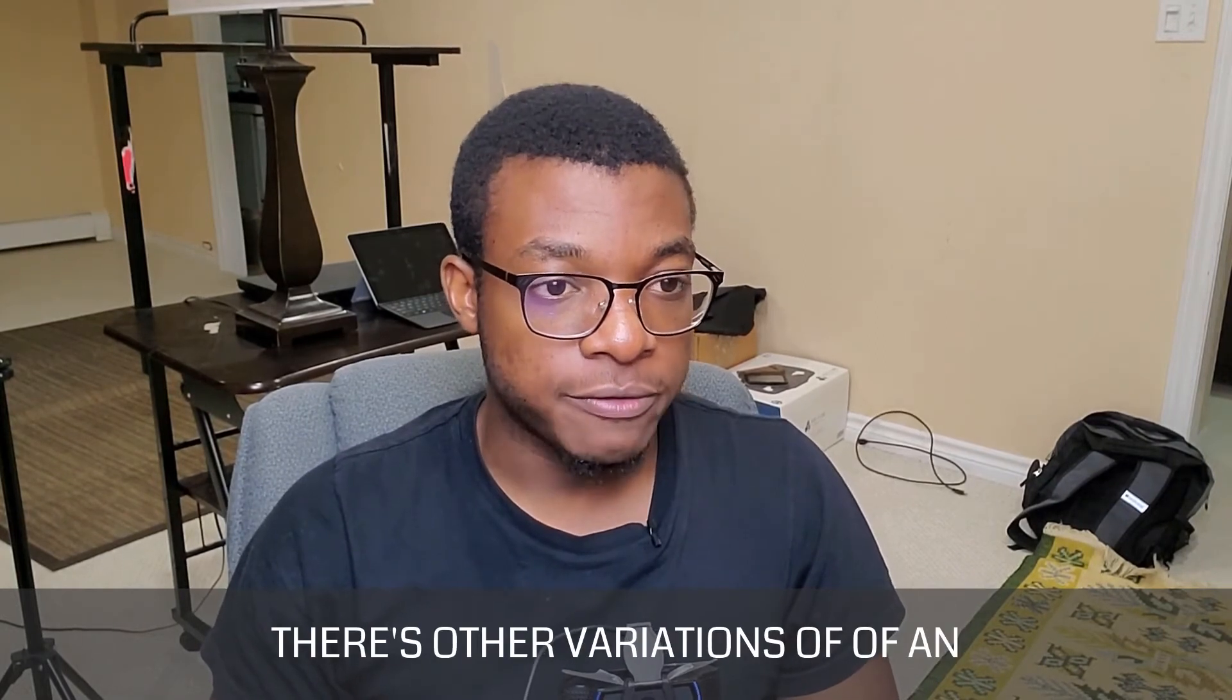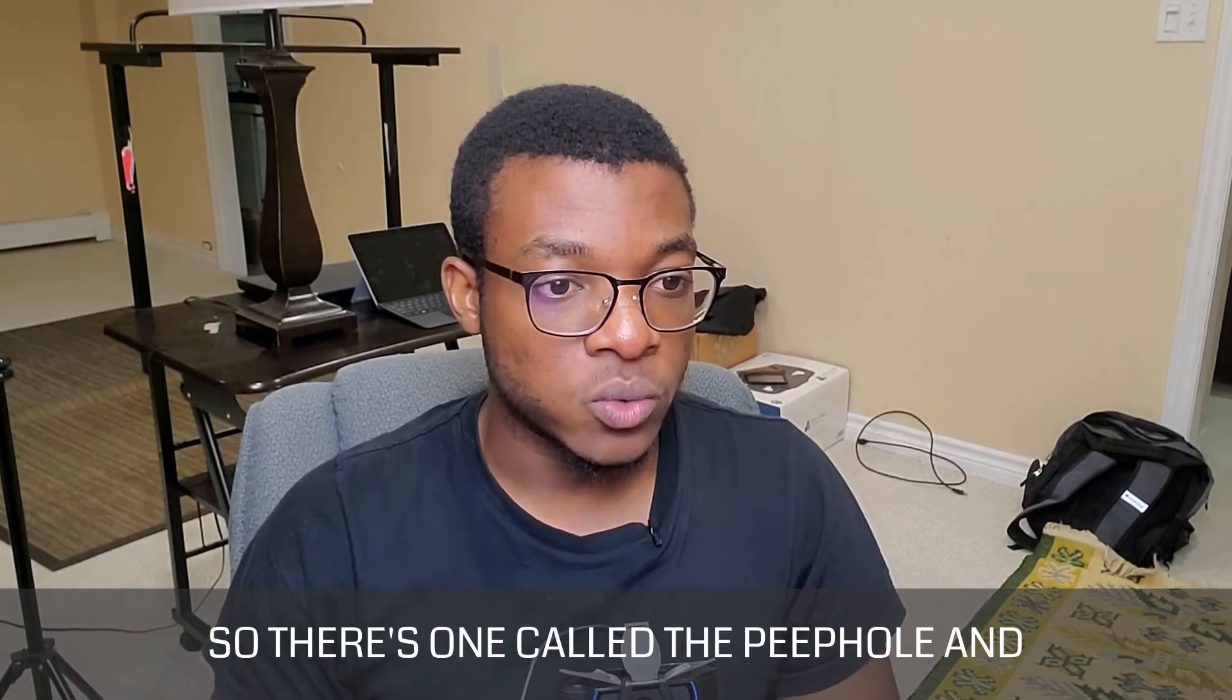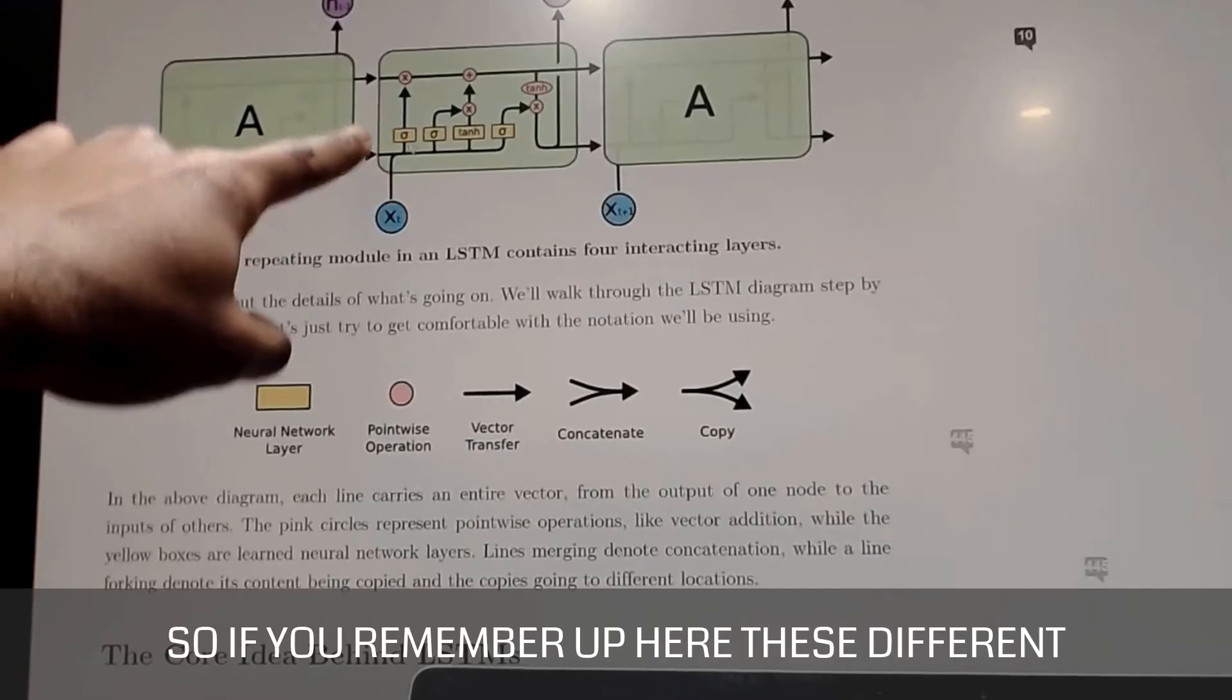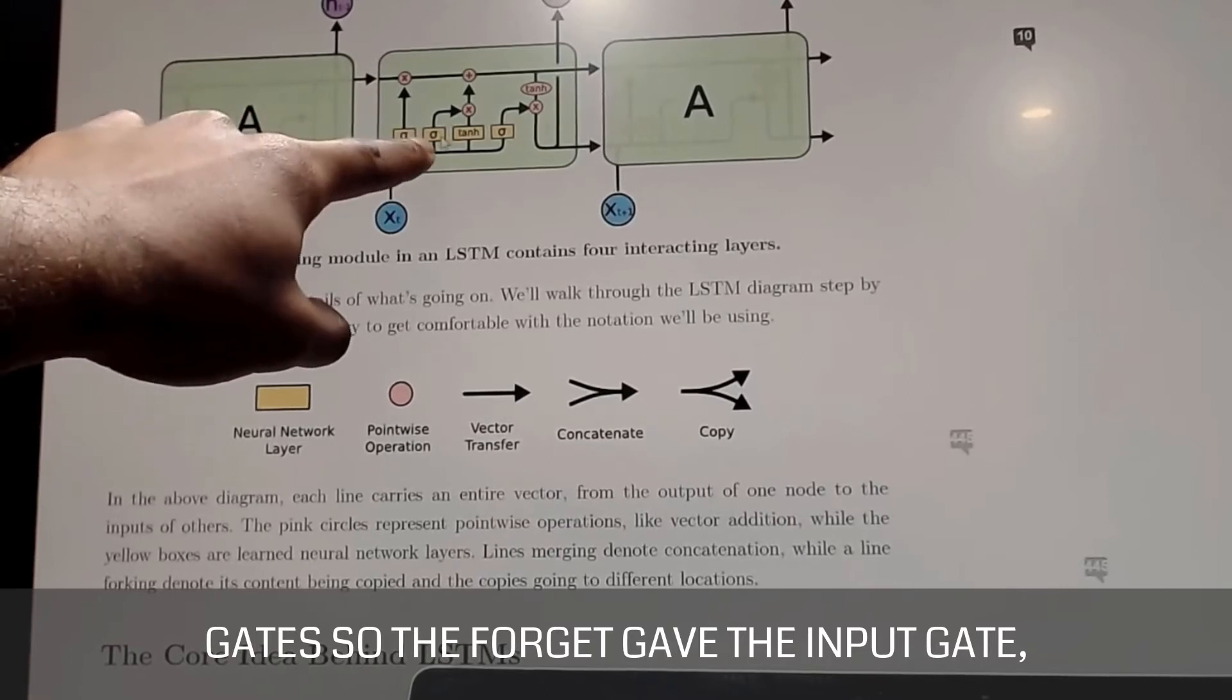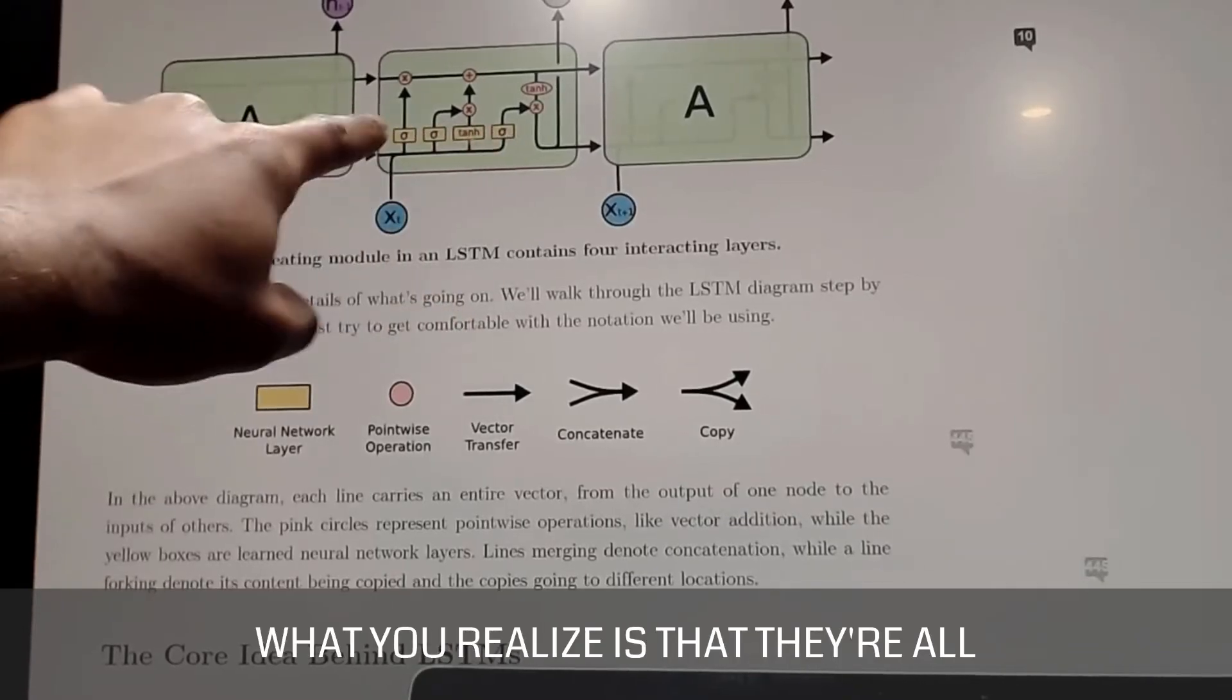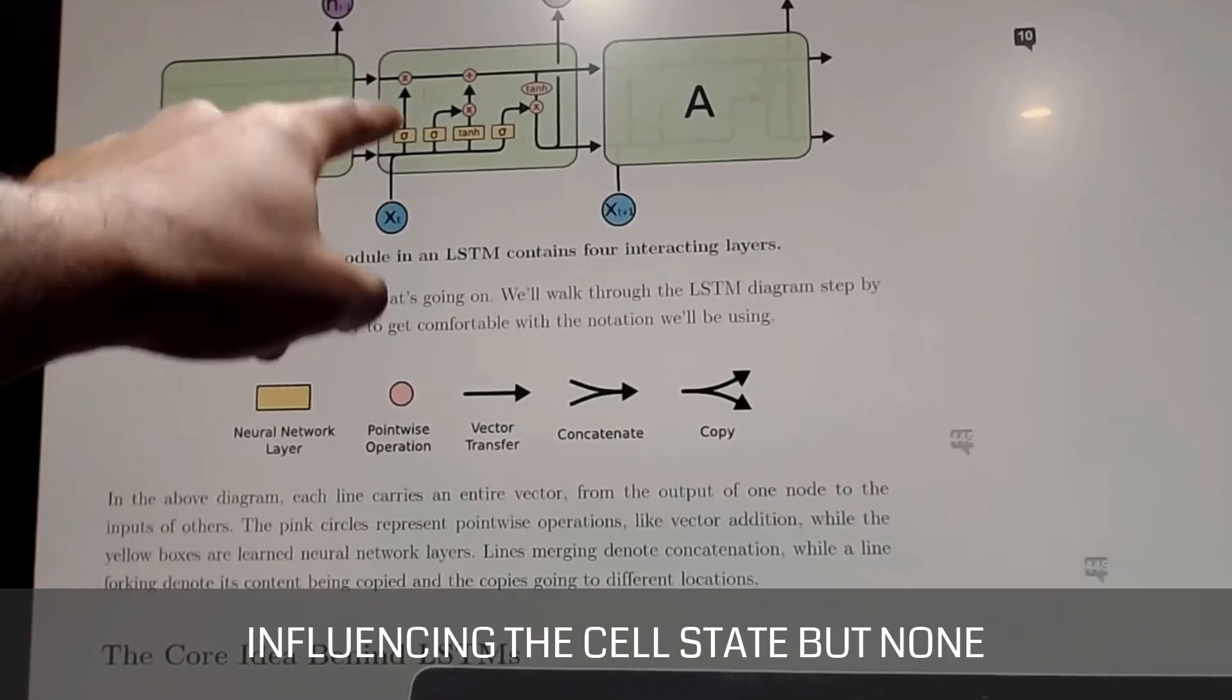And then there's other variations of an LSTM. So there's one called the peephole and the peephole essentially—so if you remember up here, these different gates, so the forget gate, the input gate, the new cell state candidate, as I like to call it, and then the output gate, what you realize is that they're all influencing the cell state.